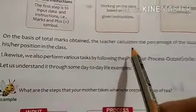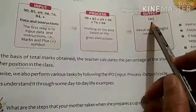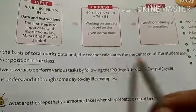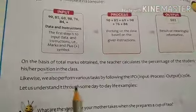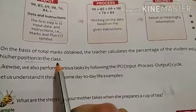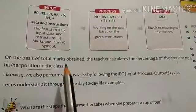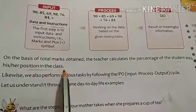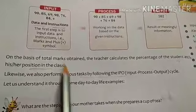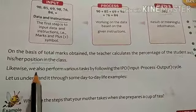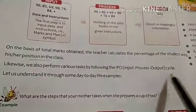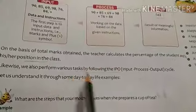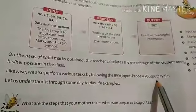On the basis of total marks obtained, the teacher calculates the percentage of the student and finds their position in the class — first, second, third, fourth. This is the method of calculating marks and percentage. Likewise, we can perform various different tasks by following the input, process, output cycle. The procedure will always be the same: input, process, and output.